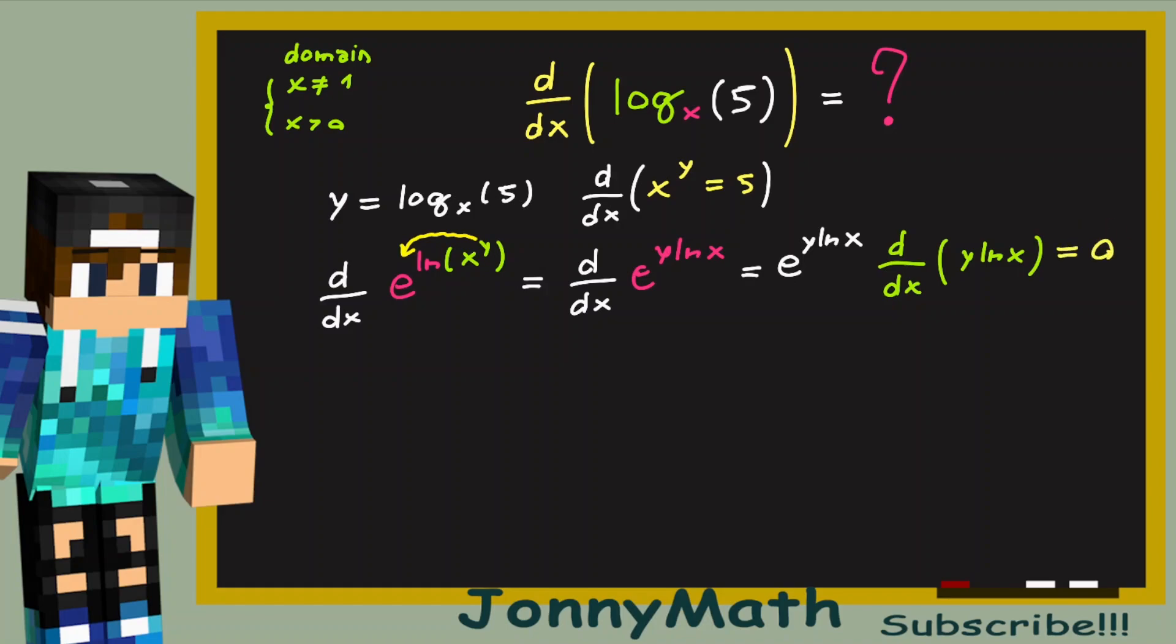And since all of this equals 0, we can just simplify this. Because this is always greater than 0, so we can do it. And it's fine.